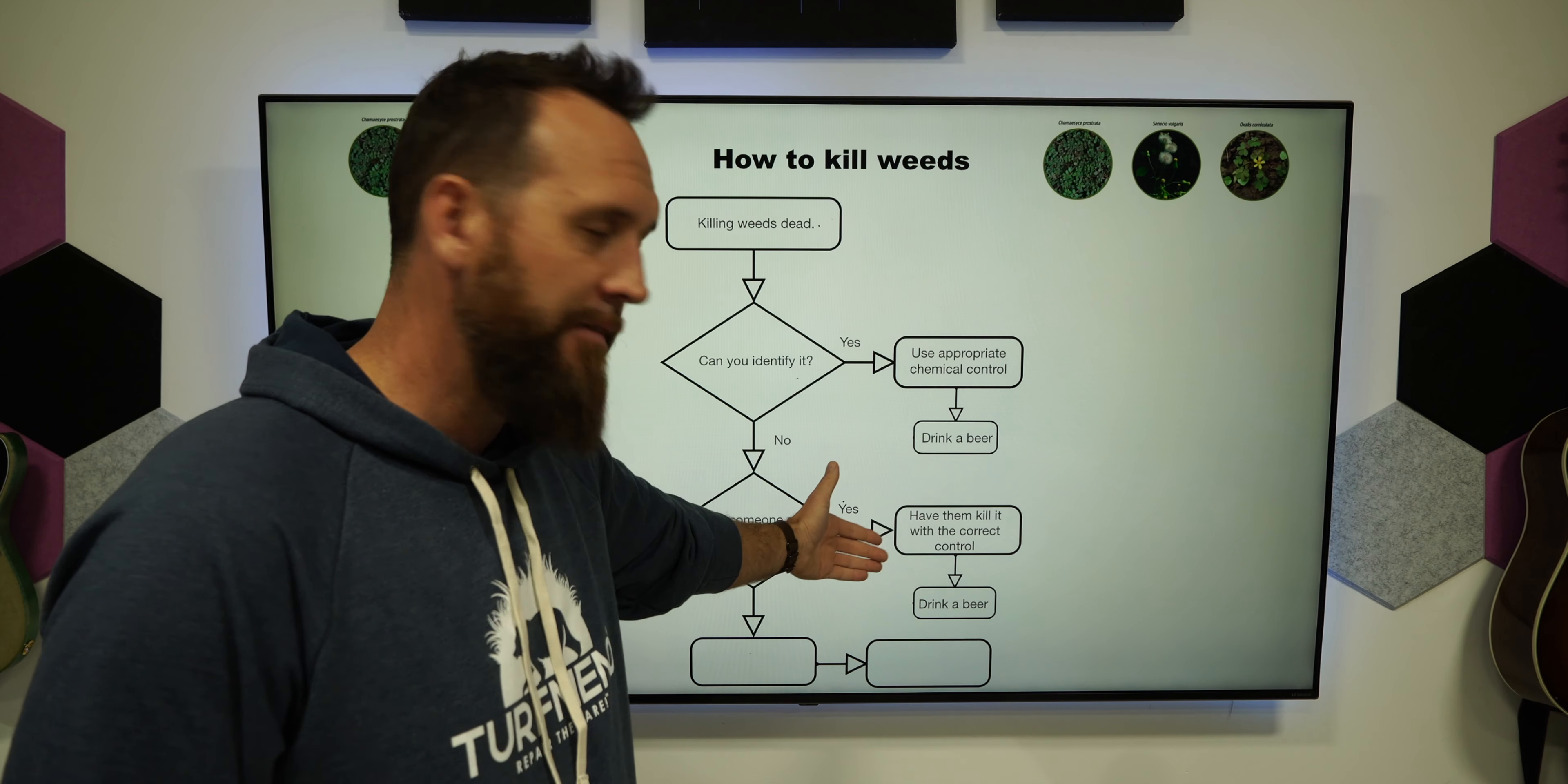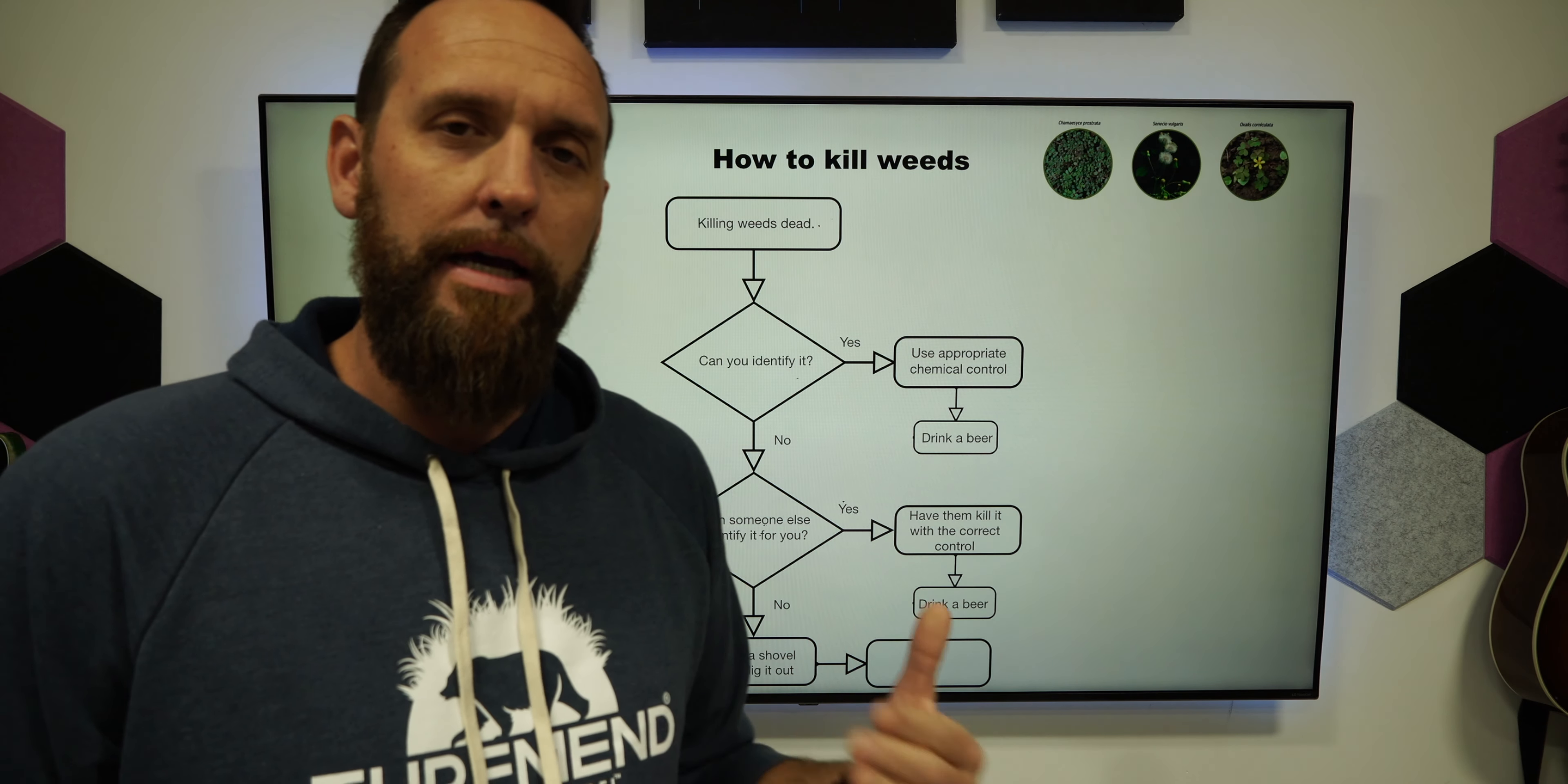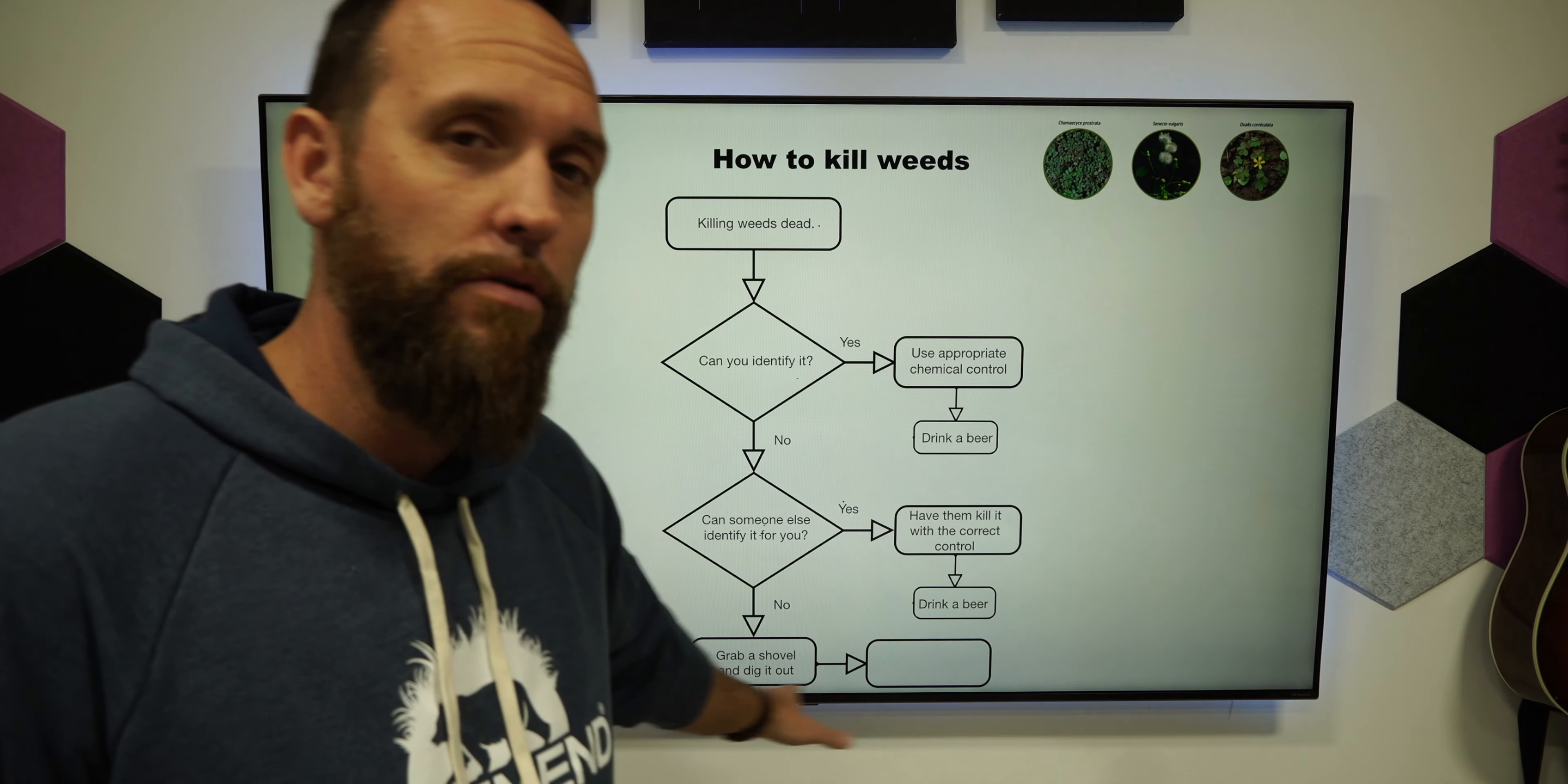So if someone can identify it, have them kill it, drink a beer with them, and thank them. Okay, so what if you don't know anybody? You don't know how to identify it, you don't know anyone who can identify it. You come all the way down to the bottom category: grab a shovel and dig it out. Don't bother with chemical controls, don't try to guess, don't put the wrong thing down. And this is actually real advice here—I know this is kind of supposed to be funny and fun in life, but this is the real part: don't do it.